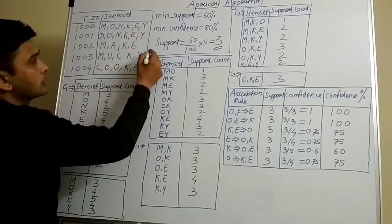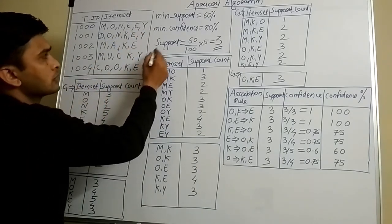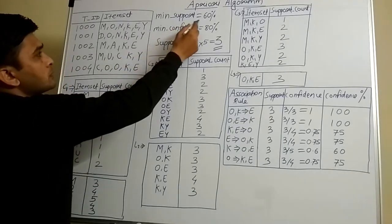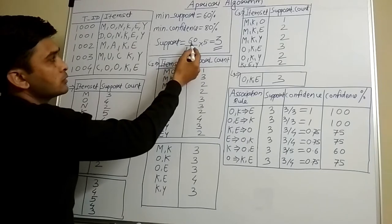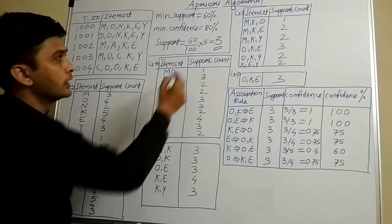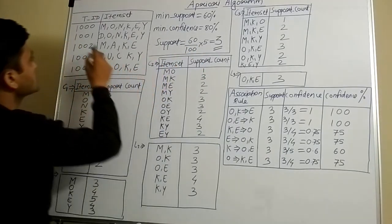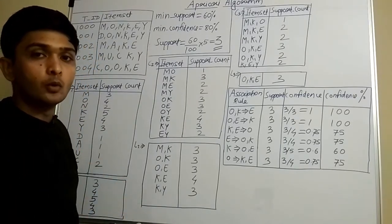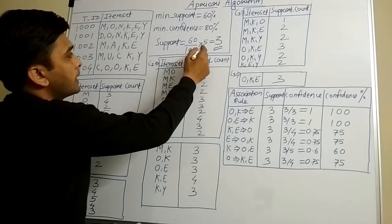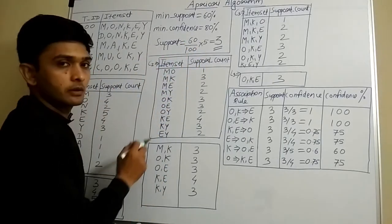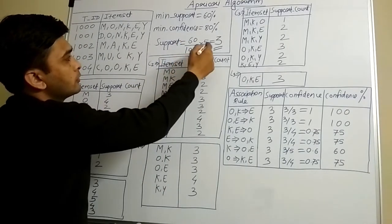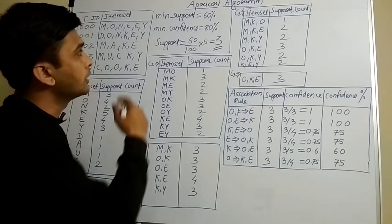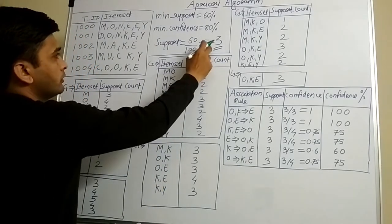From this given data, first of all we will find out the support. Support is equal to minimum support multiplied by the total number of records. Minimum support is 60%, so: 60/100 × 5 = 3. We have 5 records in our original table, so the support threshold is equal to 3. This is how you calculate the actual support count from the minimum support percentage.